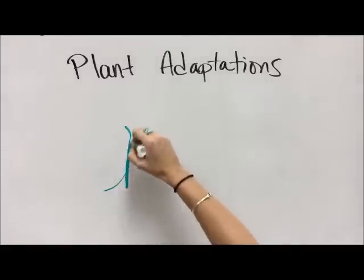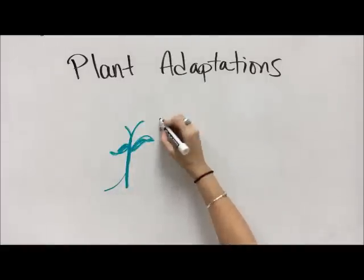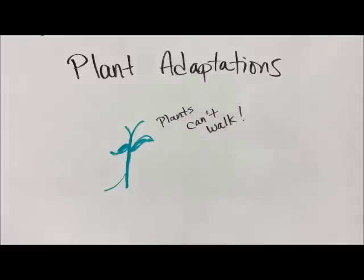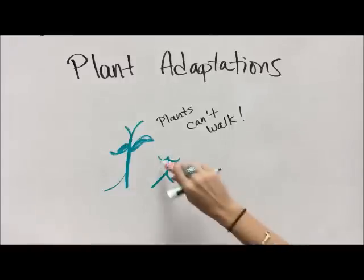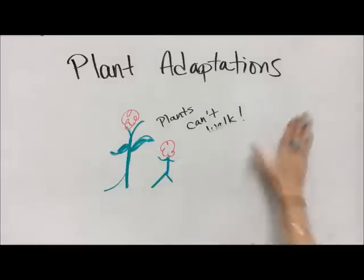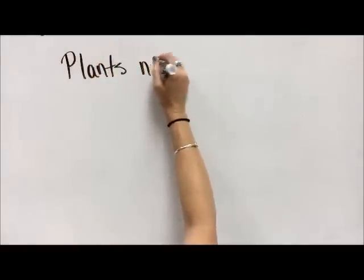Let's have a little chat about plant adaptations. Plants have an issue — they can't walk. Which means they don't have the ability to move around to find their resources. They've had to develop a lot of creative ways to get or hang on to the resources that they need when the resources come to them. So let's talk about three things that plants need.